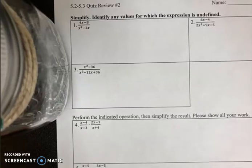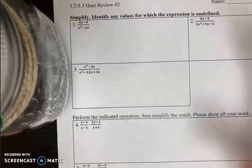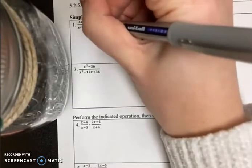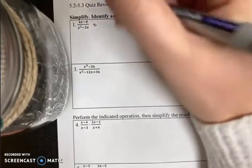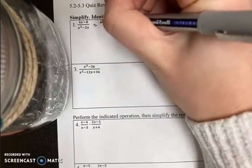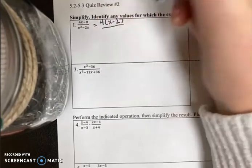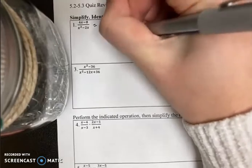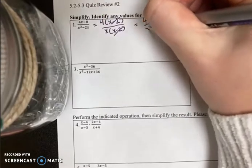Numbers 1 through 3, you're supposed to simplify and identify any values where the expression is undefined. So in order to simplify, we're going to have to try and factor first and cancel stuff out. In the numerator I have a GCF of 4, so that's x minus 2. There's a GCF of x in the denominator, x minus 2. They cancel, you're left with 4x.